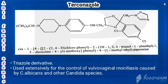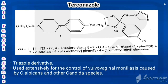The next drug is terconazole. Its structure has a piperazine nucleus where the first portion is connected with phenyl. The fourth portion of phenyl is connected with OCH2 (methoxy), which is connected with the same 1,3-dioxolane ring. The second portion of dioxolane is connected with 2,4-dichlorophenyl and triazol-1-yl-methyl. The fourth portion of piperazine is connected with a 1-methylethyl group. That is the structure of terconazole.